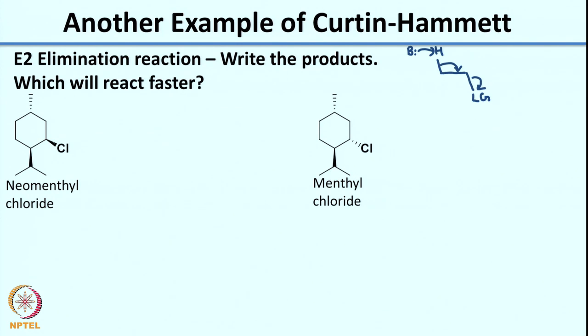One thing that you should understand is the relationship between these two molecules: they are diastereomers because there is a change in configuration only at one position. The question to you is which of these will react faster. You can press the pause button and work out this problem. When you are back, we will try to solve this together. As I said, the first thing you need to do is write the chair conformation for each of these.